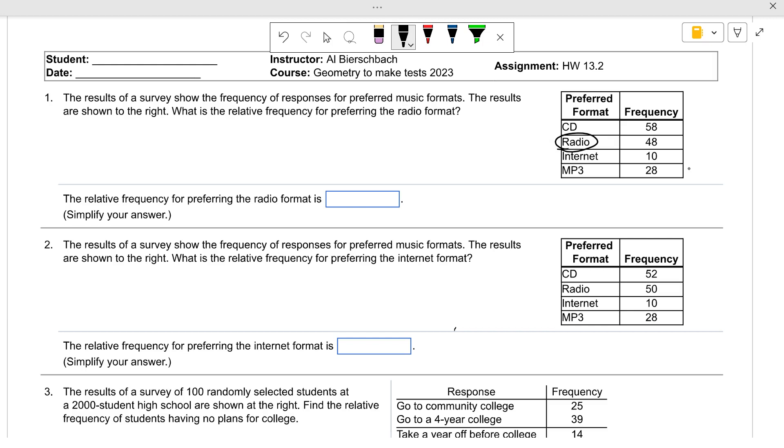Well, first thing you have to do is what? Add up all the frequencies. What's 58 plus 48 plus 10 plus 28? Somebody with the calculator please. 144. So you put radio, which is 48 over 144, and let the calculator write it as a fraction. Press equals and let your calculator reduce that fraction for you, because we want a simplified fraction. If you do not simplify your fractions I'll count them wrong, okay? So make sure you reduce your fractions. Your calculator will do it for you. What do you get? One-third.